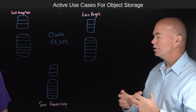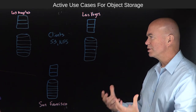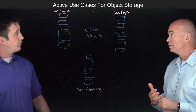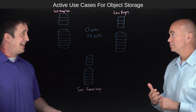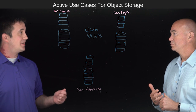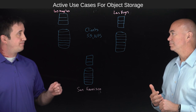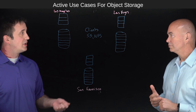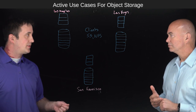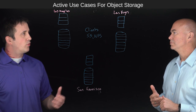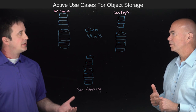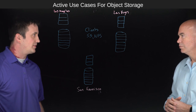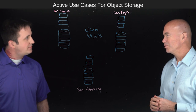Before we jump into the use cases, what are some of the pain points you're seeing? When we talk to our customers, there are three that really jump out. First, there's accessibility of the data — how do I make sure that when I need to use the data, it's readily available? Second, performance — some customers with very specific workloads need very performant systems, and some options in object storage today don't provide that level of performance. And then, of course, cost — that's across the board, no matter the vertical, it's an important topic.